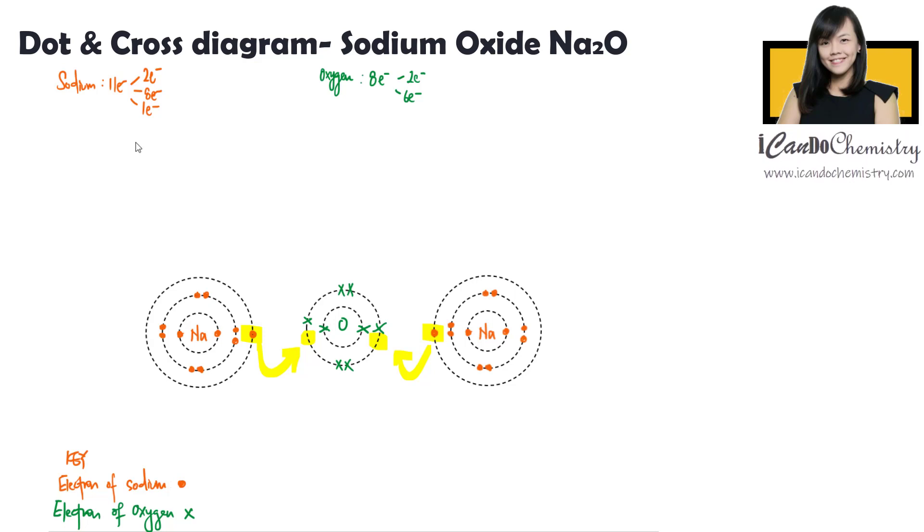So we have two sodium. Each donates one electron to oxygen. Sodium ions and oxide ions are formed. Now let's work out the charges of the ions.